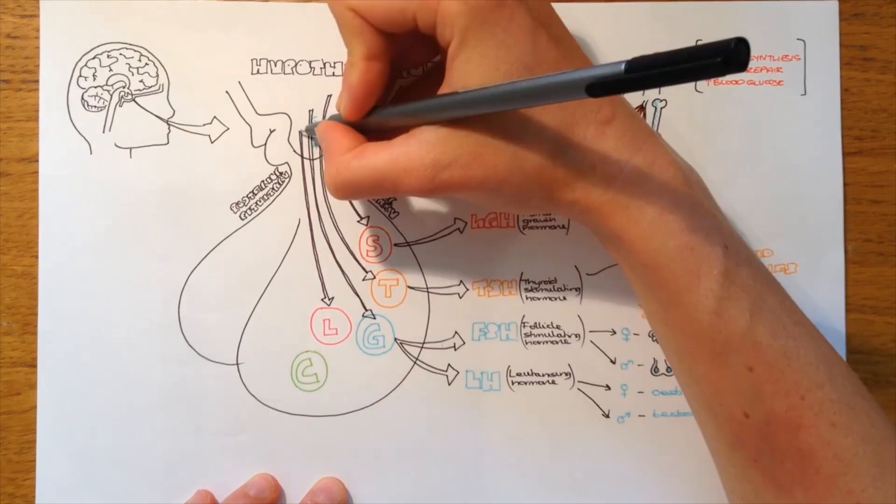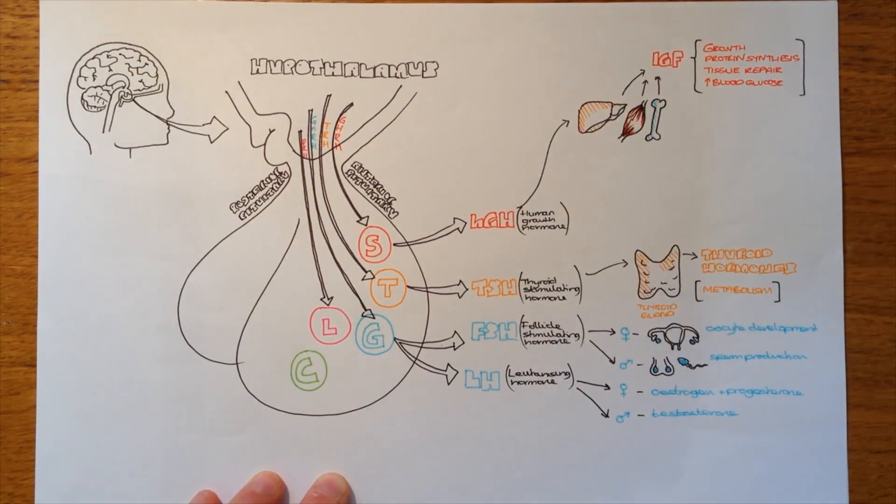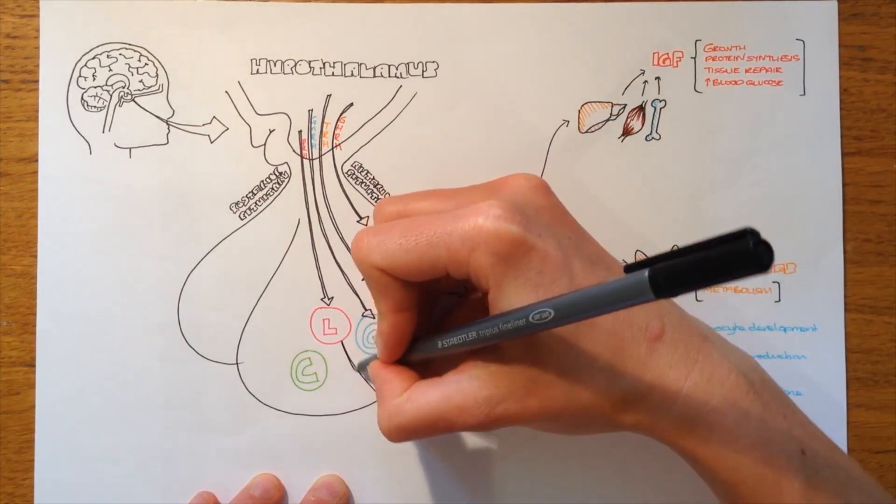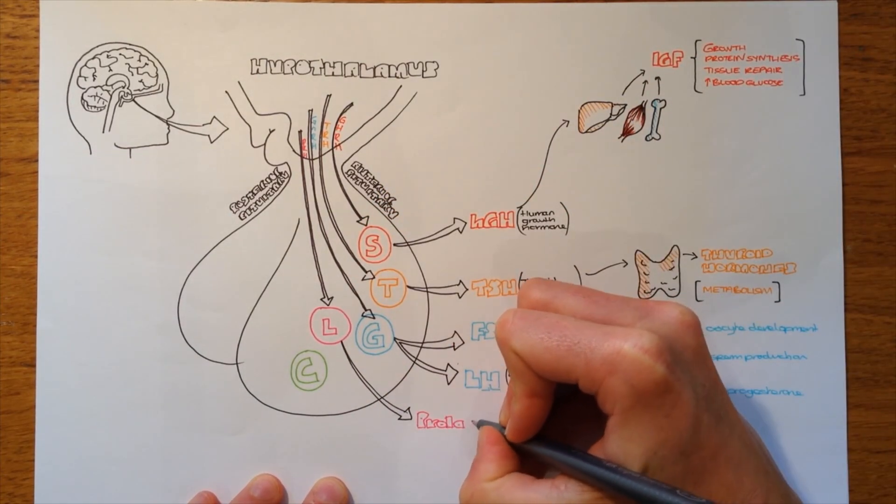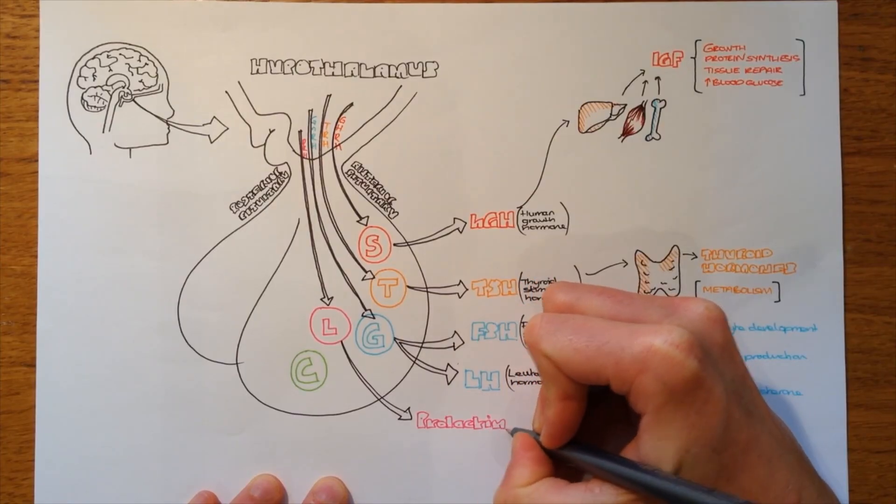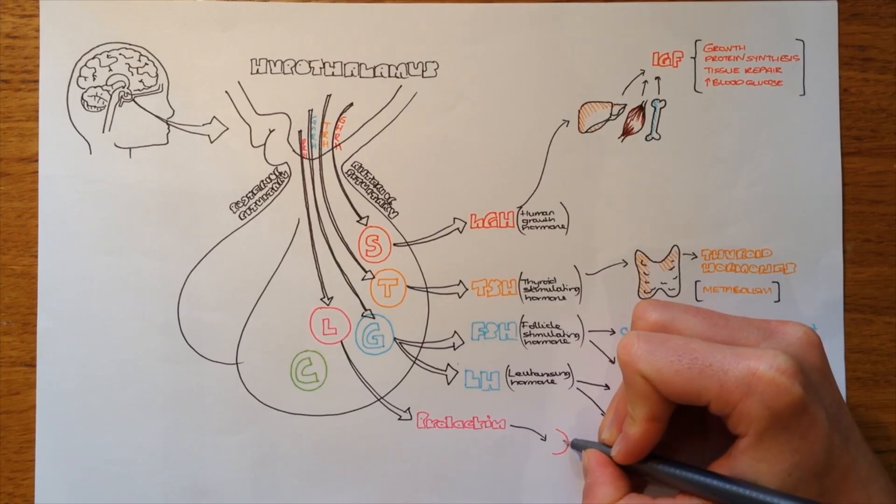The next one we'll talk about is prolactin-releasing hormone, produced by the hypothalamus, travels to the anterior pituitary, stimulates the lactotroph cells to produce prolactin. This enters the blood and it stimulates the breasts to produce breast milk.